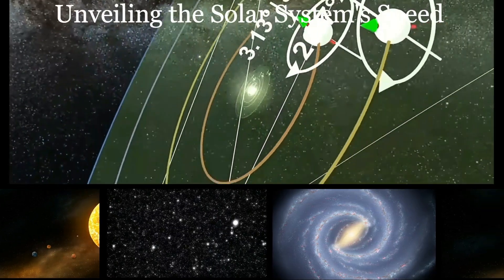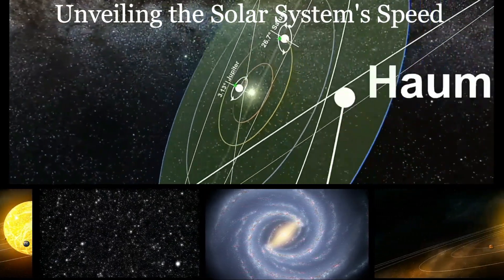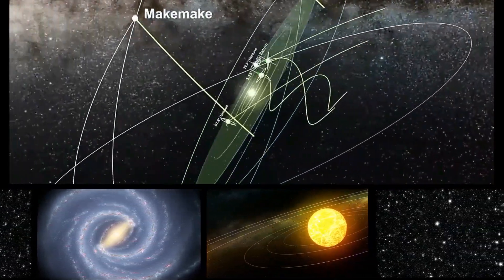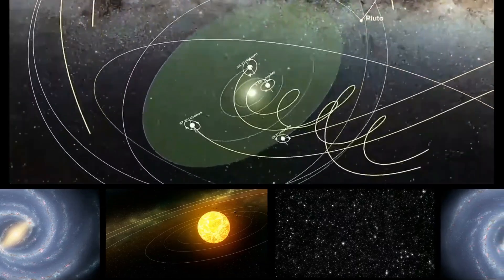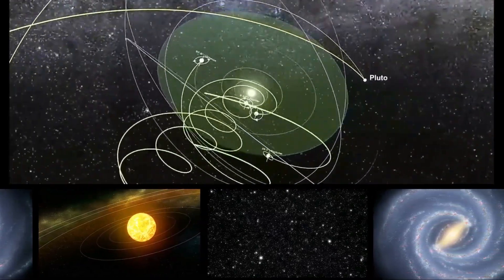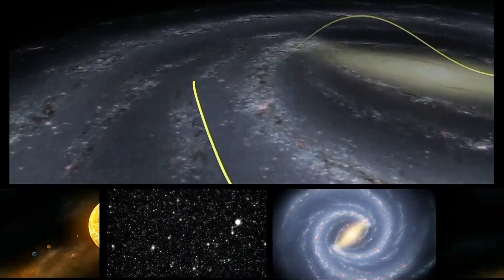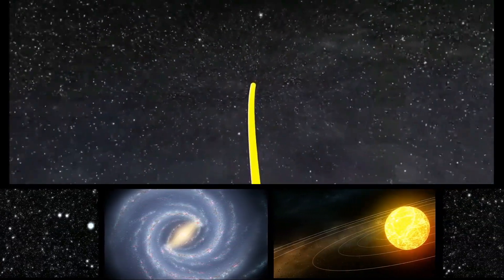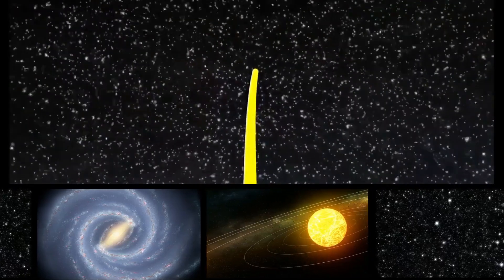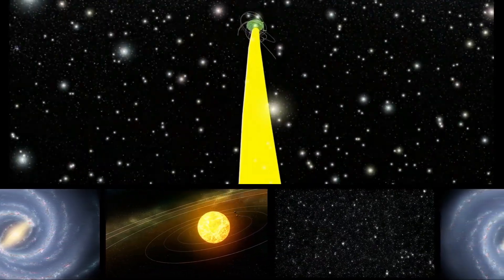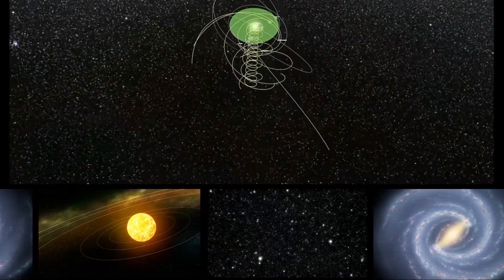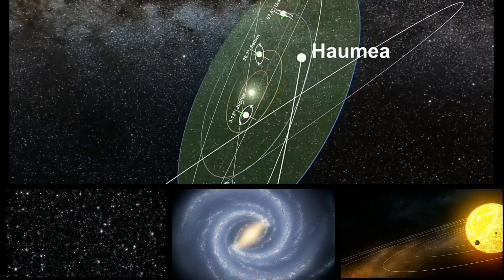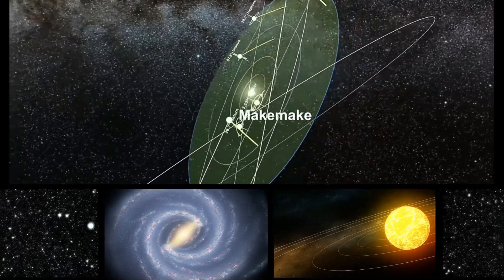Greetings! Have you ever wondered how fast our solar system travels through space? It's a fascinating question that astronomers have been grappling with for centuries. In today's discussion, we'll delve into the concept of the solar system's speed, exploring how scientists measure our cosmic journey through the Milky Way galaxy and the orbital speeds of the individual planets within our stellar system. We'll uncover the ingenious methods astronomers use to make these calculations, and along the way, we might even discover some surprising facts about our solar system's motion. So buckle up and get ready to explore the fascinating world of celestial speeds.